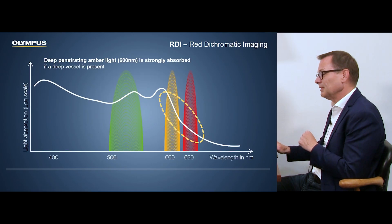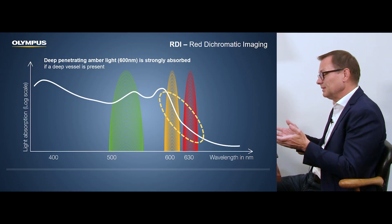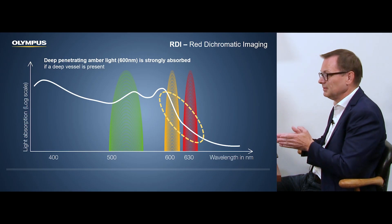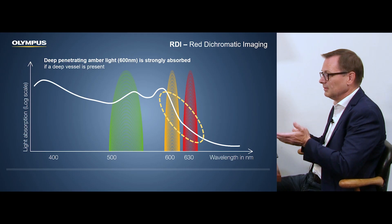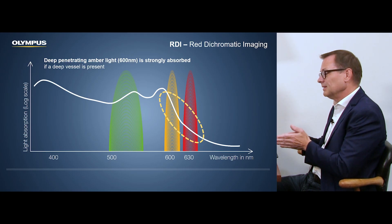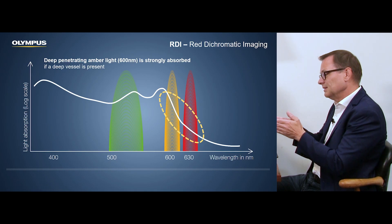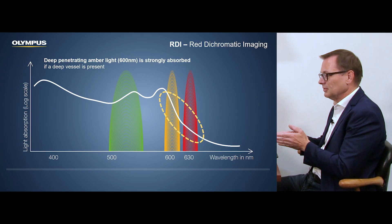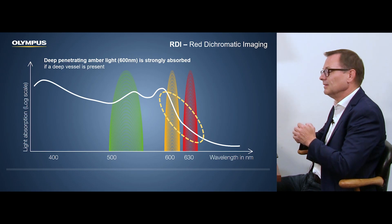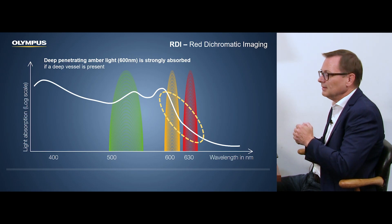We're talking again about an optical technology here. That's why we are looking at different colors across the whole white light spectrum. NBI uses green and blue light, whereas RDI is rather using this yellowish and amber color and the red. Green is also used to get the intensity, but at the end the amber and the red is what makes the difference.